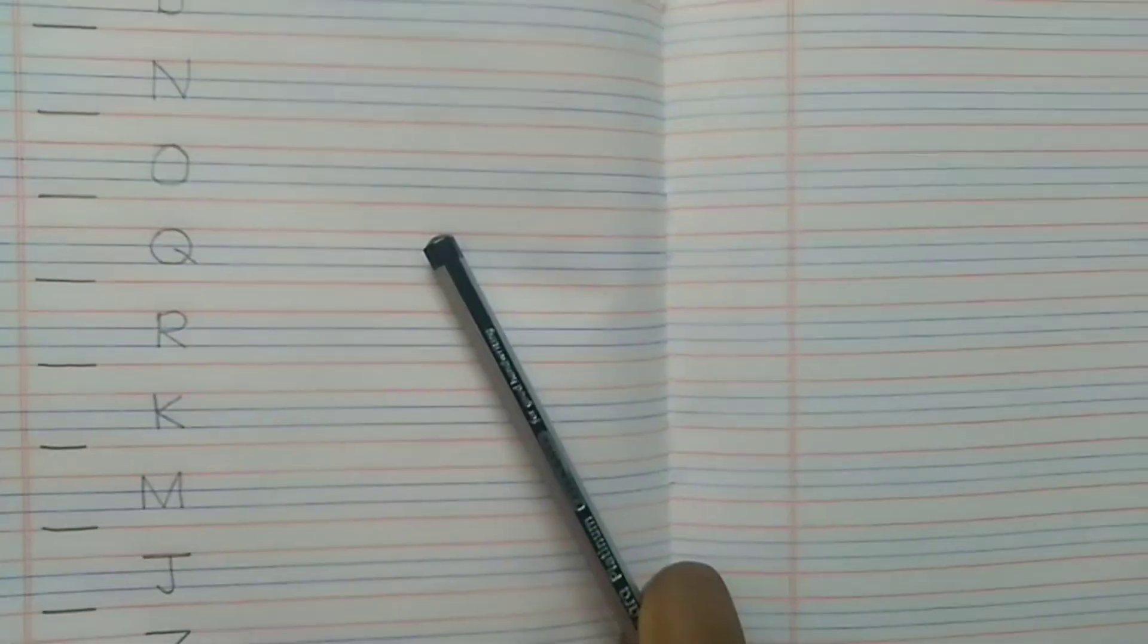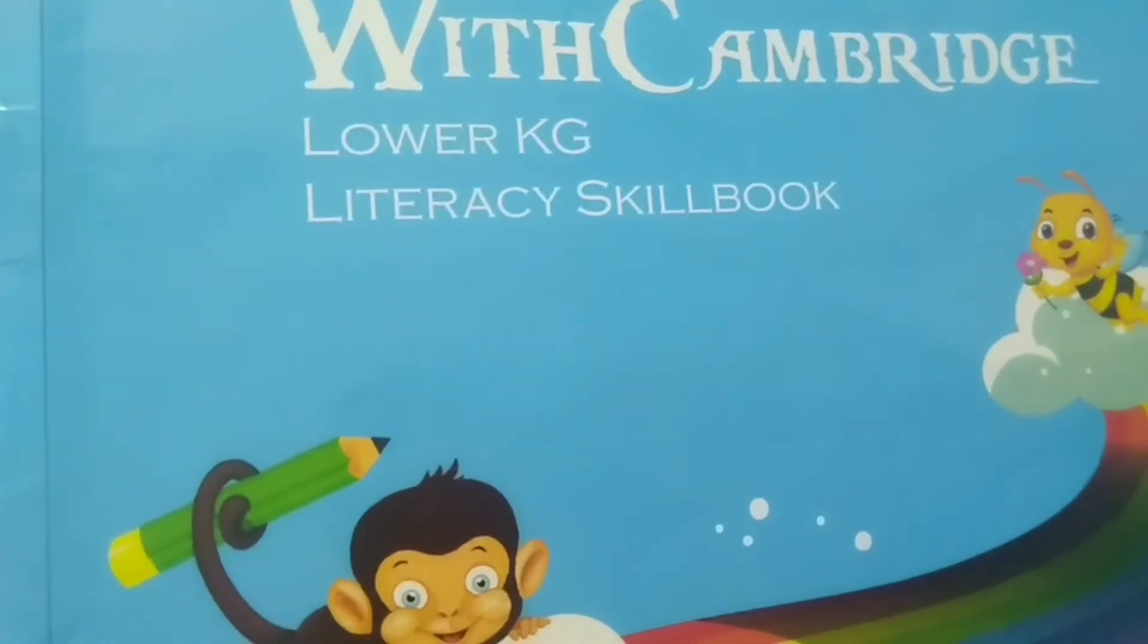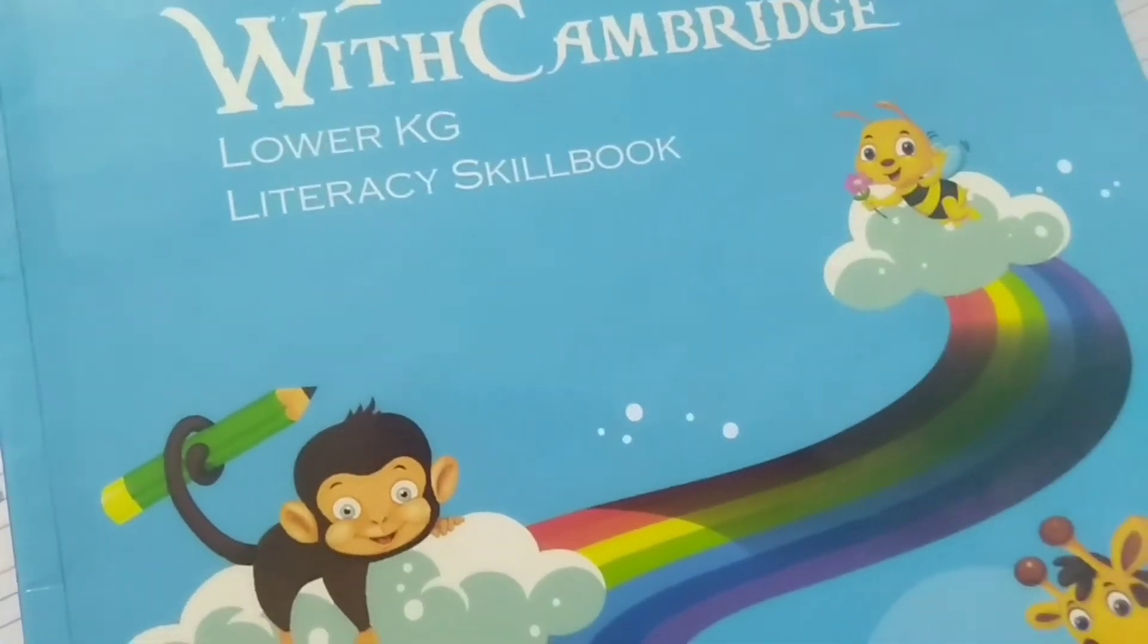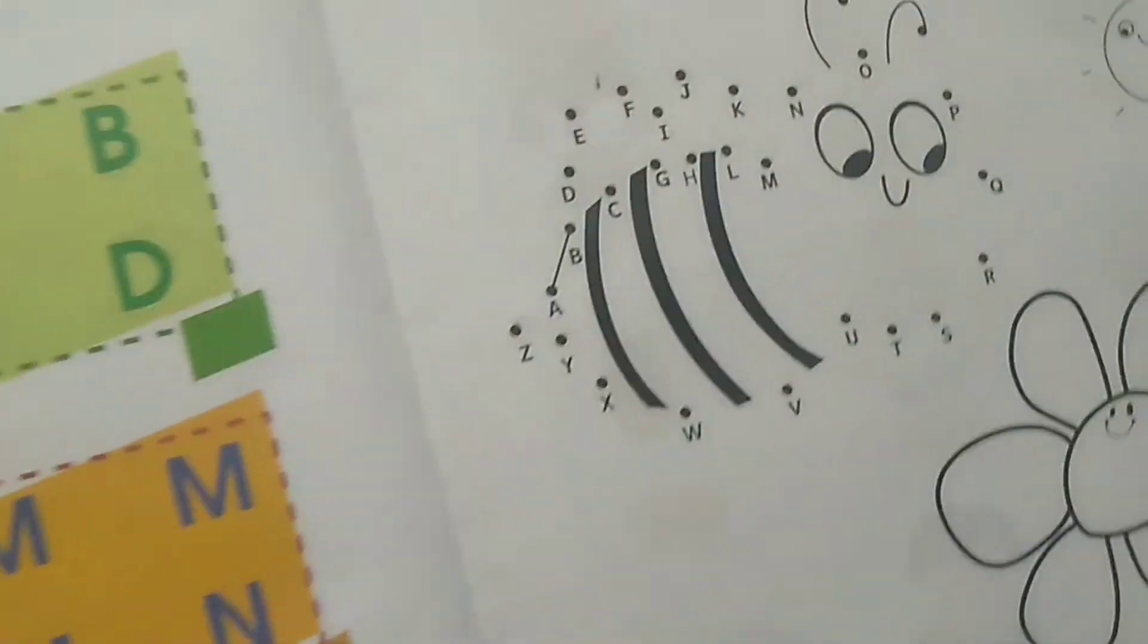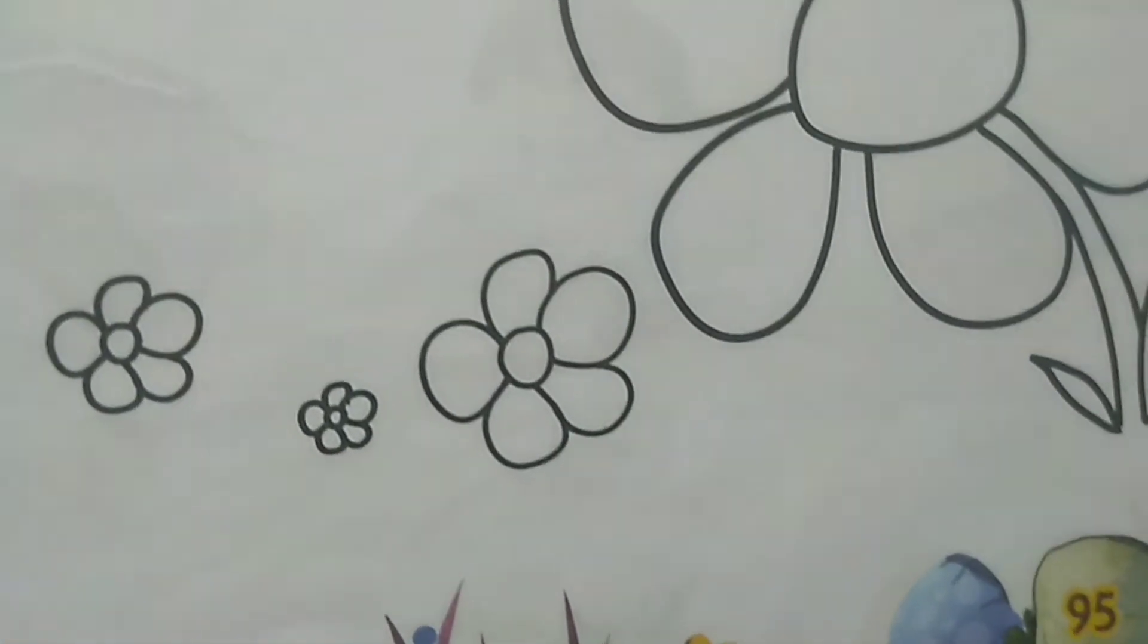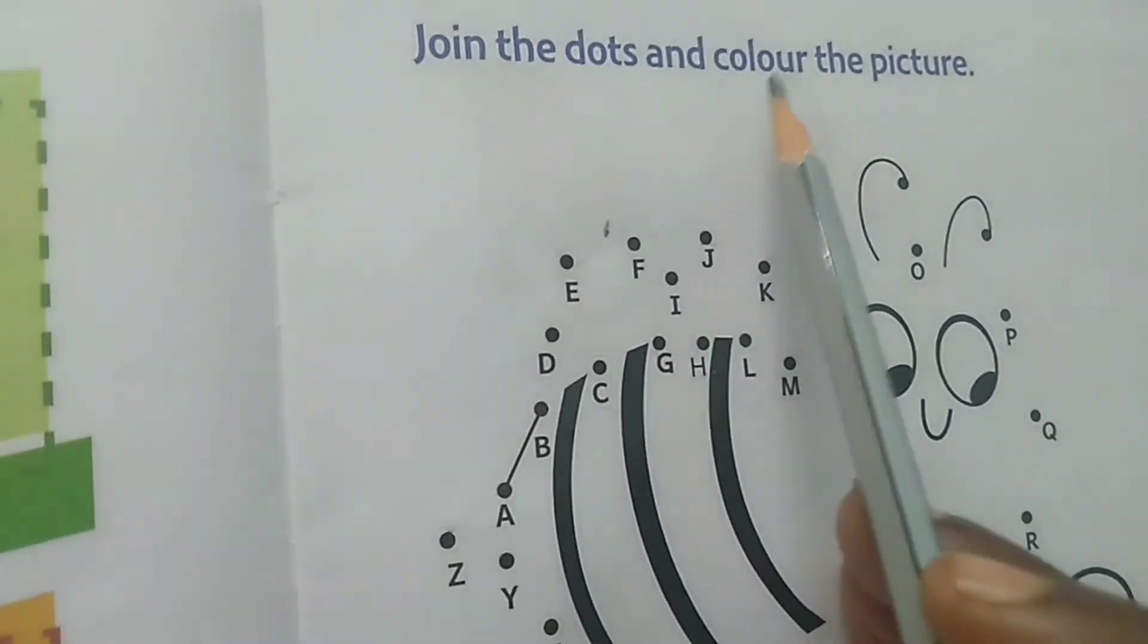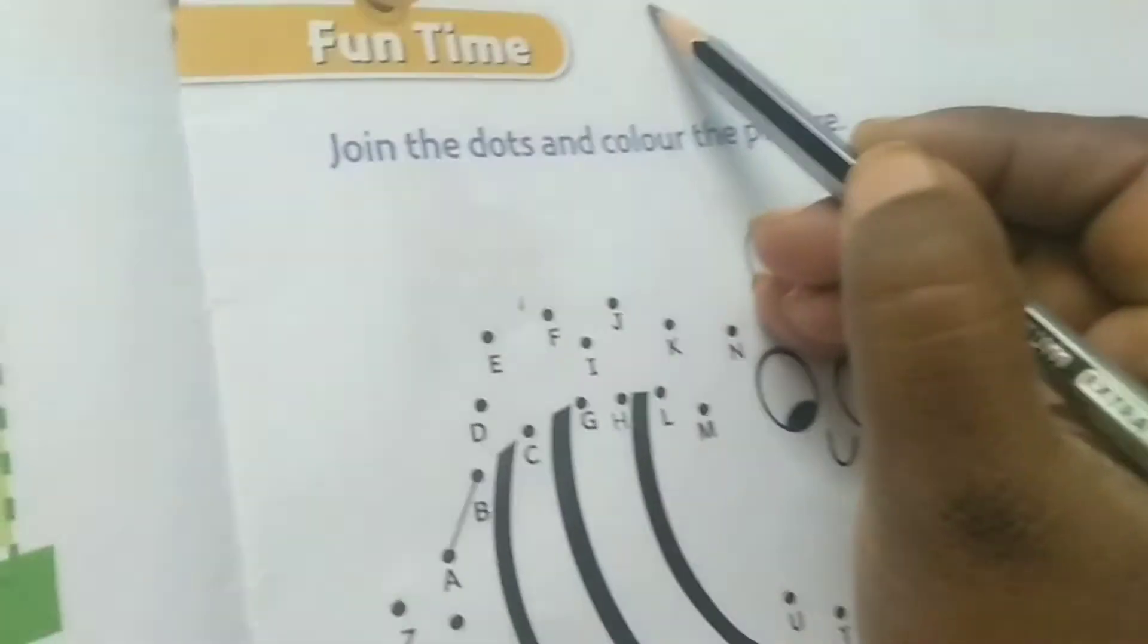I will be sharing this as photo pics also, page by page. Video I have only explained what to be done. And then you have one activity in your literacy skill book. Open page number 95, 95.